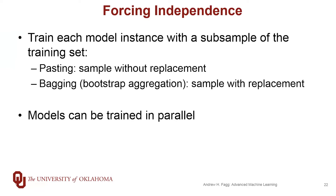The other idea is bagging, which is short for bootstrap aggregation. This is sampling with replacement, meaning a training set element can be used in one ensemble member, or two or three, or even zero ensemble members. Once the training set is sampled for each ensemble member, the different models can actually be trained in parallel, as we saw with the voting classifier as well.